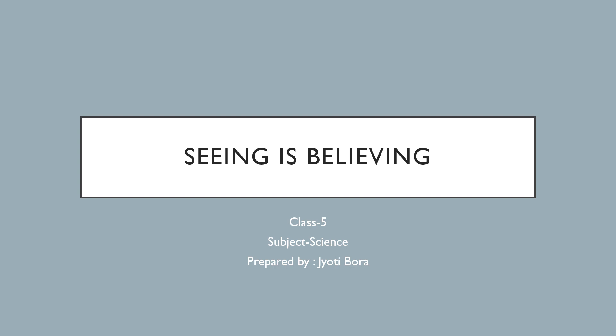Today we will discuss chapter number 8, the name of the chapter is 'Seeing is Believing'. We are able to see different things around us with the help of light. If there is no light, we won't be able to see anything — like your study table, your pen, pencil, anything. Objects which allow light to pass through them easily we can see through, and objects which don't allow light to pass through we cannot see through.